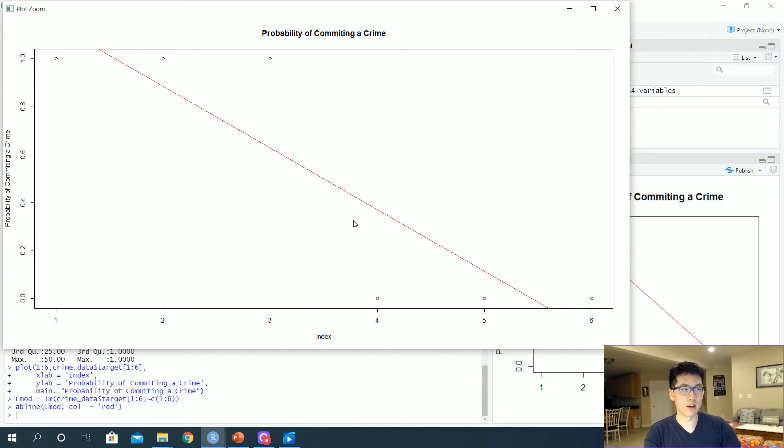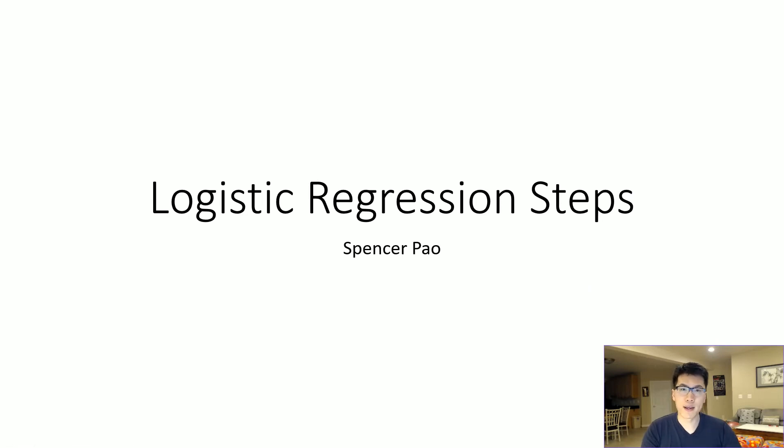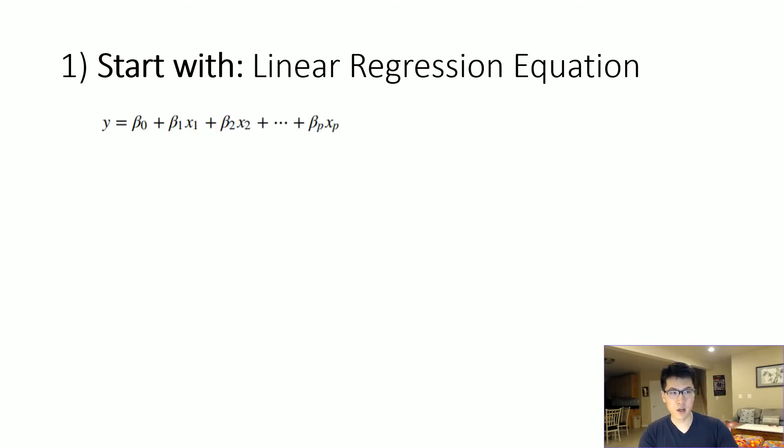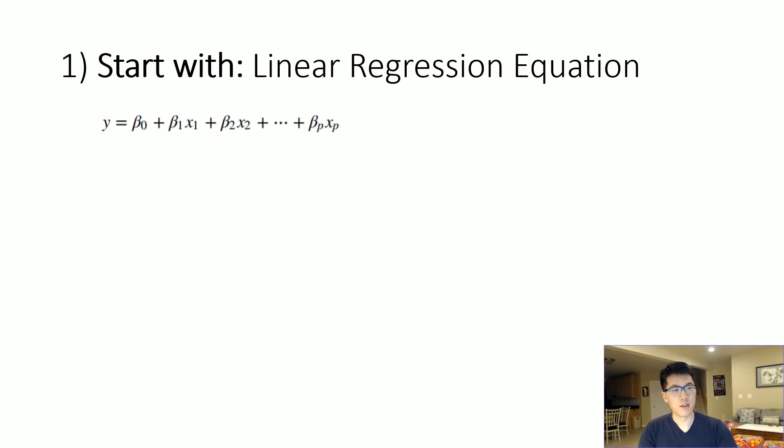Going into the back end on how logistic regression works, let us take a look at our logistic regression steps that I put together. First we'll always start with a linear regression equation because logistic regression is essentially a derivation of linear regression. Starting off with our typical linear regression equation, we have our y is equal to our beta coefficients.